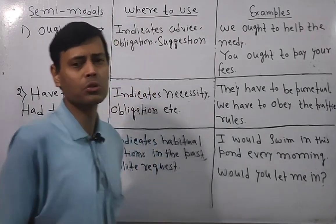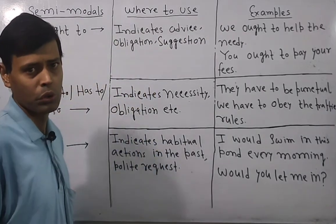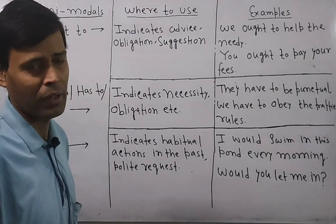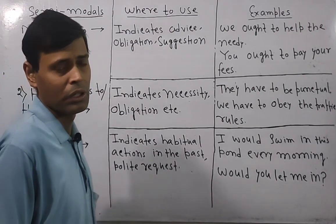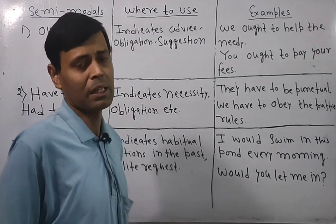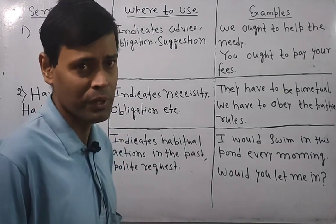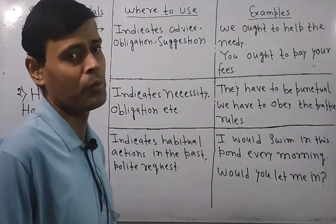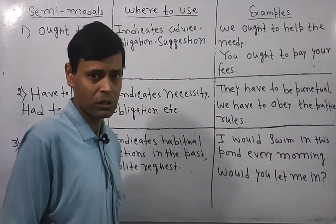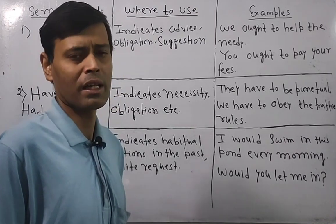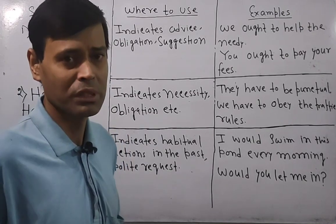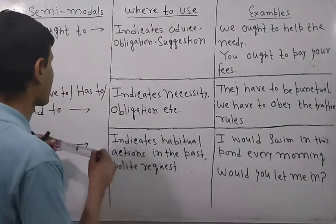In case of a polar request, you can also use 'would.' For example: 'Would you let me in?' or 'Would you allow me in?' It doesn't mean you have to only use 'may' or 'can' while making a request — you can also use 'would.' So options can be given in many ways, and 'would' may be the answer instead of 'may' or 'can.'